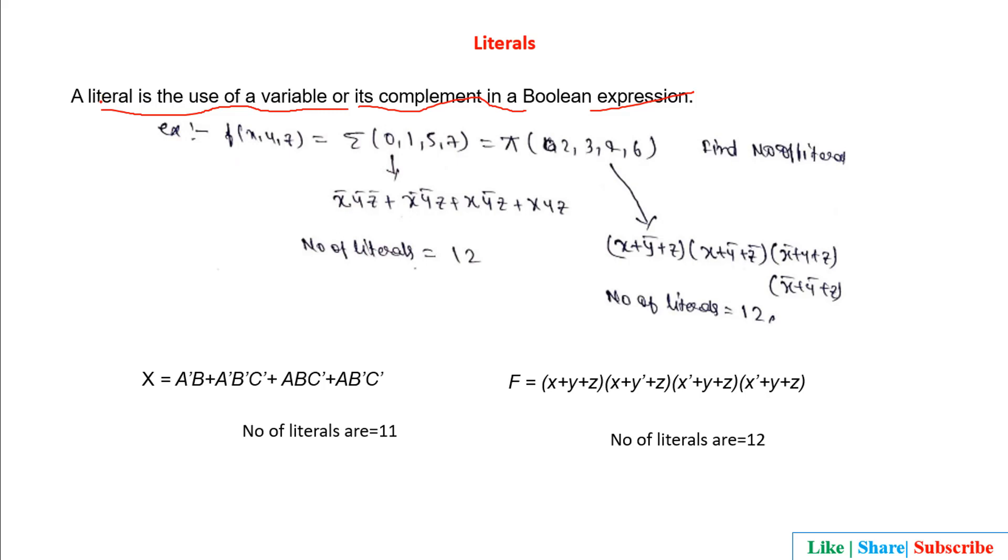You can say that literals are the number of variables which may be in the complement form or not. In the example, you can see the function having variables X, Y, Z, and then sum of product is written like this and product of sum is written like this. We have to find how many number of literals are available.